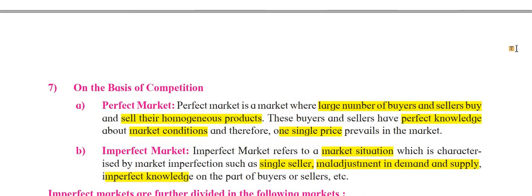The second is imperfect market, which refers to a market situation characterized by market imperfections such as a single seller, maladjustment in demand and supply, and imperfect knowledge on the part of buyers or sellers. That is why it is called an imperfect market. So these are the classifications on the basis of competition. Today the remaining four classifications are clear, with all head points highlighted. In the next video, we will come with more explanations of this chapter. Thank you so much, students.